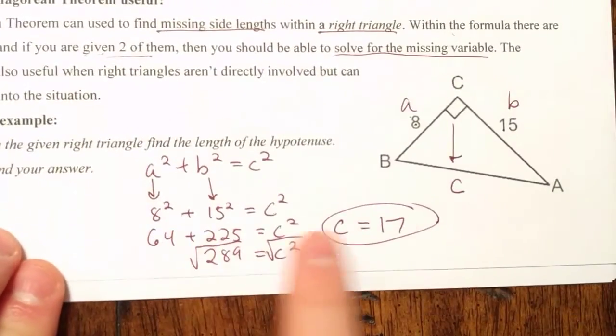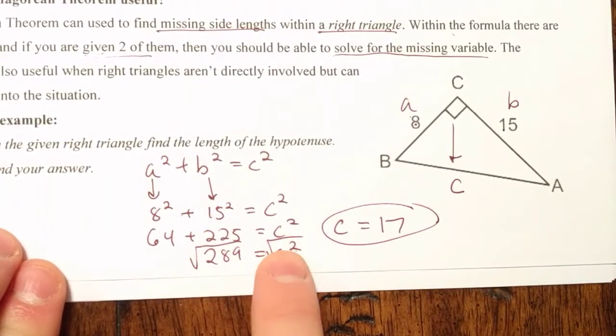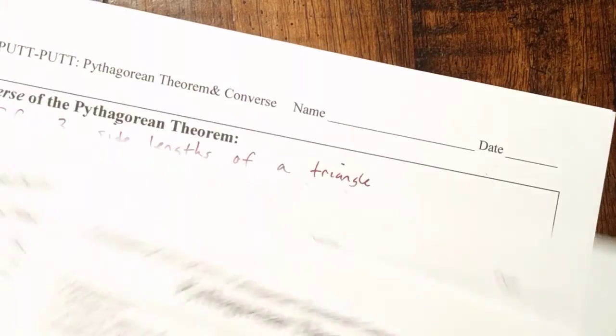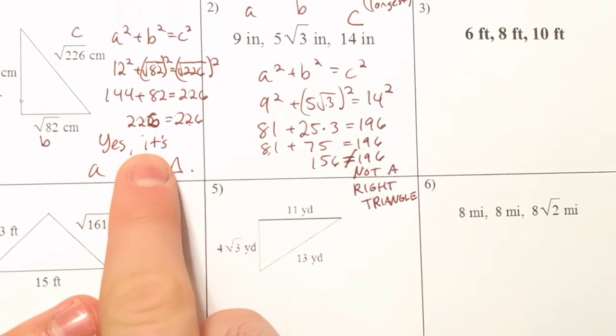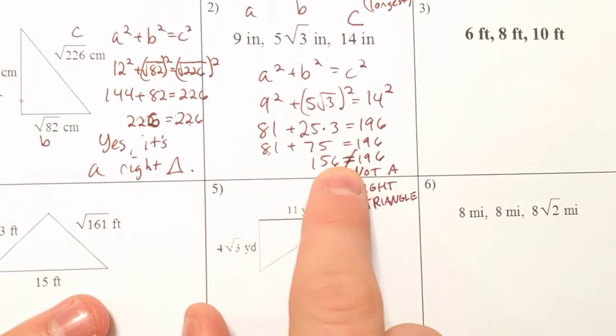So, we've done the two objectives. We have found missing sides using the Pythagorean theorem. That was our first. Plugging in the numbers we know, solving the ones we don't using a square root. The second objective was to test to see if three side lengths actually made up a right triangle. If the two sides of the equation are equal, then it's a yes. If the two sides of the equation is unequal, then it's going to be no, not a right triangle.